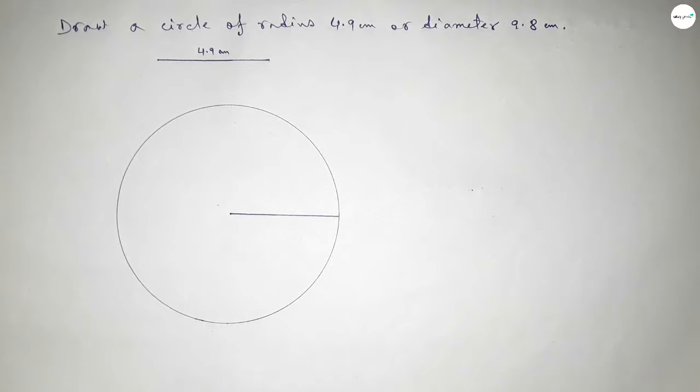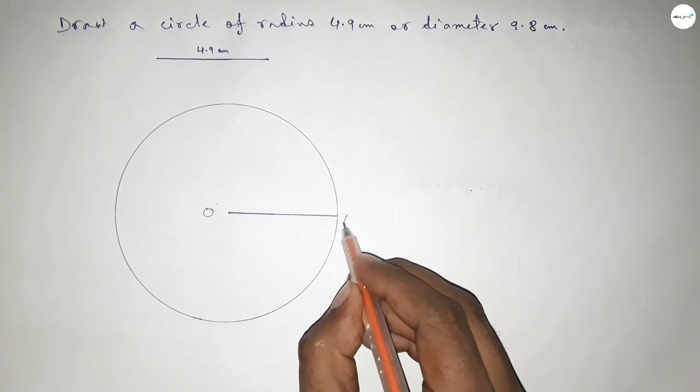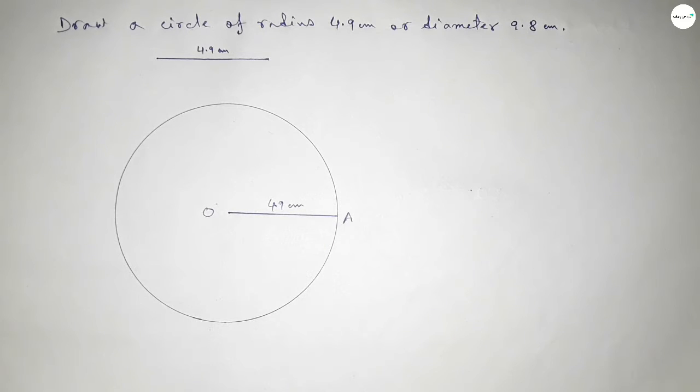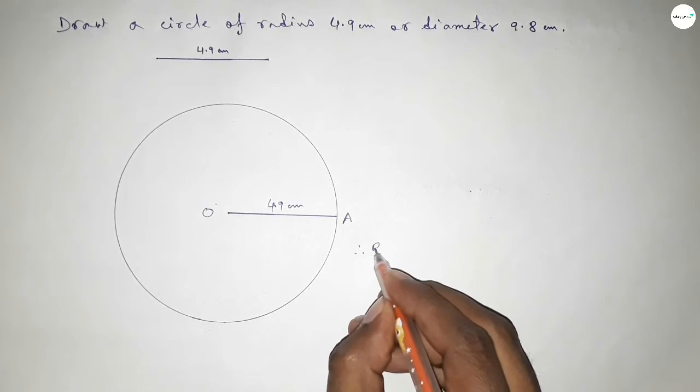Okay, and taking here the center O and here A. So radius OA equal to 4.9 centimeter. Therefore radius OA equal to 4.9 centimeter.